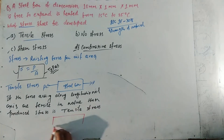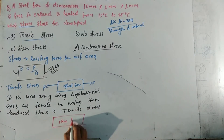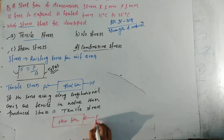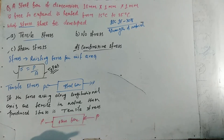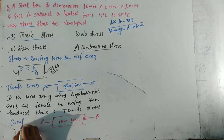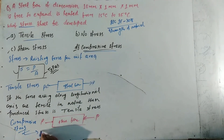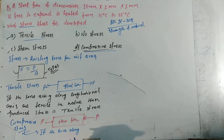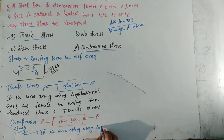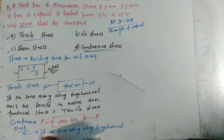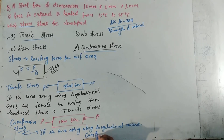Next, option D — compressive stress. Compressive stress is the opposite of tensile stress. Here, compression takes place on the steel bar. If the forces acting along the longitudinal axis are compressive in nature, then the stress produced on the object is called compressive stress.